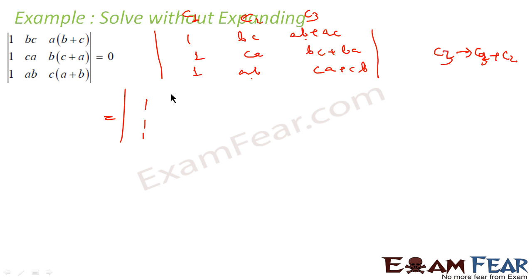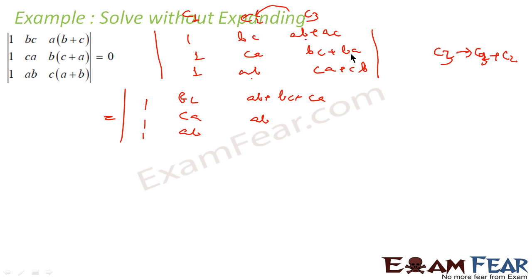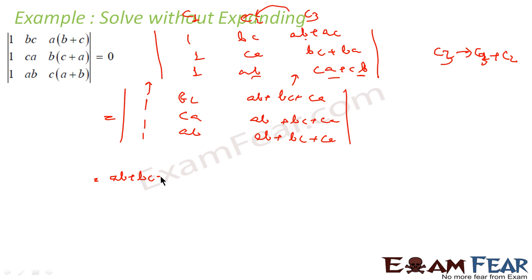After applying C3 = C3 + C2: column 1 stays as 1, 1, 1; column 2 remains bc, ca, ab; and column 3 becomes ab + bc + ca for every row. We can take (ab + bc + ca) as a common factor, making column 3 all 1, 1, 1.